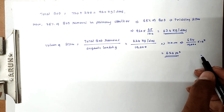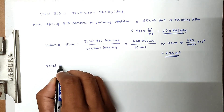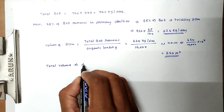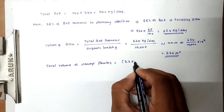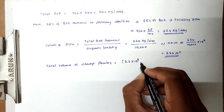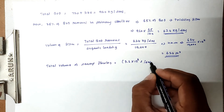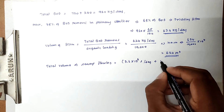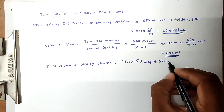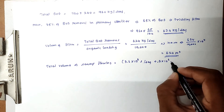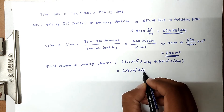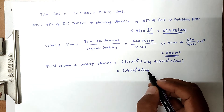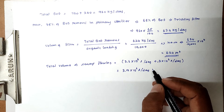Now we find the total volume of sewage flowing. Domestic sewage is 3.6 × 10⁶ liters per day plus industrial sewage of 0.3 × 10⁶ liters per day, giving a total of 3.9 × 10⁶ liters per day, which is 3.9 million liters per day.